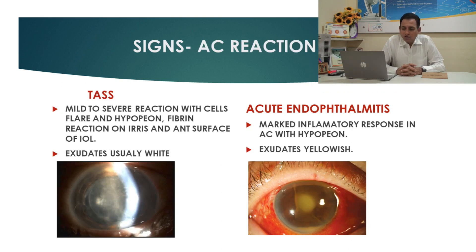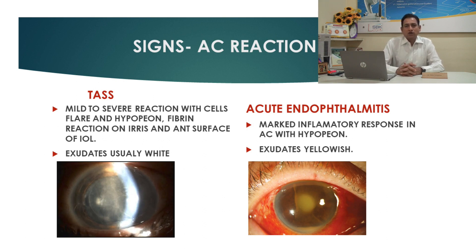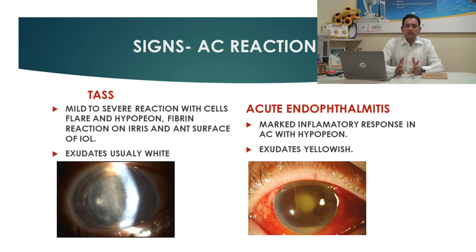Regarding AC reaction: in TASS there will be mild to severe reaction with cells, flare, hypopyon, and fibrin formation over the iris and over the anterior surface of the IOL, with exudate usually white. In acute endophthalmitis there will be marked inflammatory response in the AC with hypopyon, and exudate is usually yellowish.